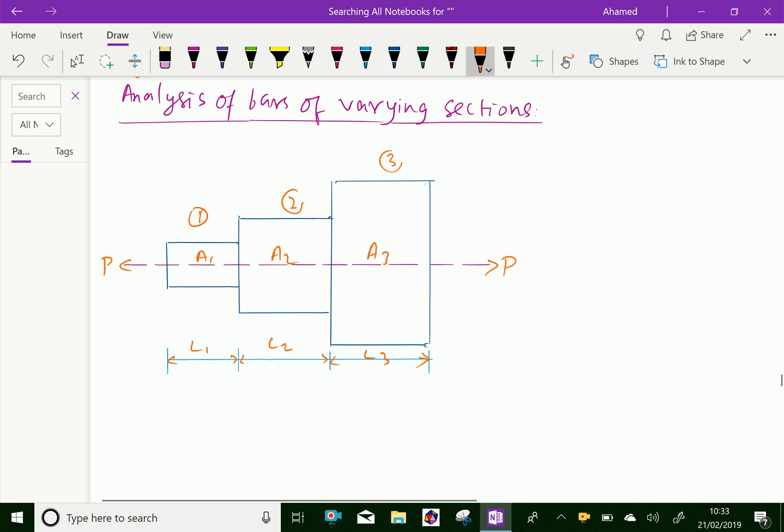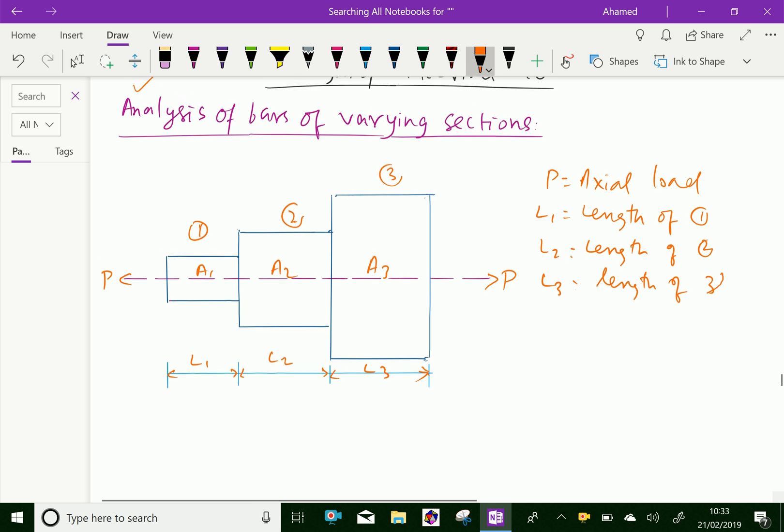Now, let P equal axial load acting on the bar. L1 equals length of section 1, L2 length of section 2, L3 length of section 3.